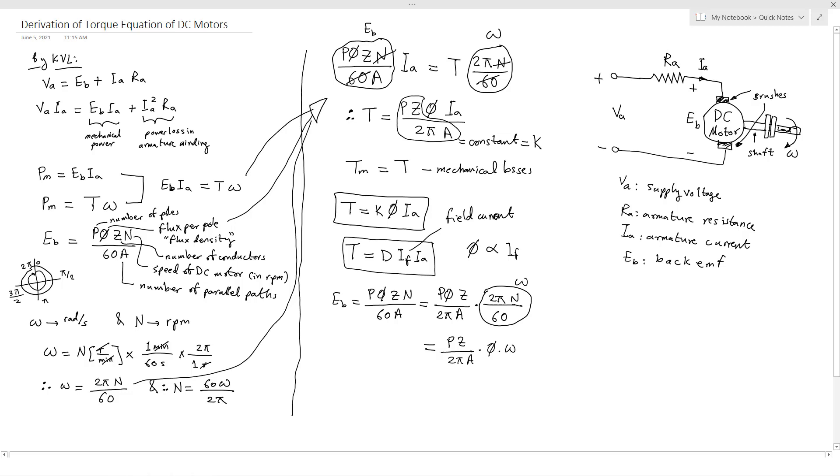So EB will equal P Z over 2 pi A multiply by phi multiply by omega. And don't forget that this term equals to K, which is a constant. So the back EMF EB equals K phi omega.